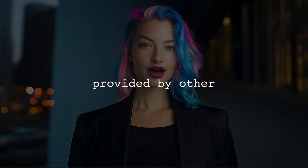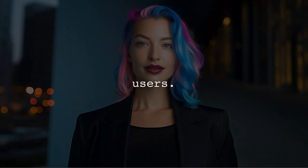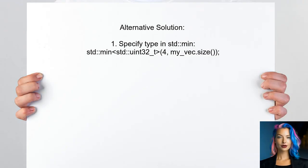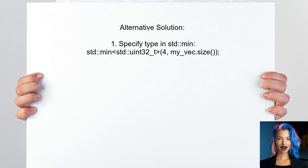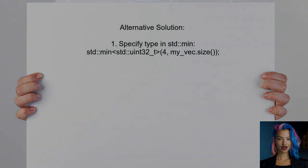Let's look at the answers provided by other users. One alternative approach is to explicitly specify the type when using function templates like std::min. For example, you can write std::min<uint32_t> for myvec.size(). This helps avoid type deduction issues.